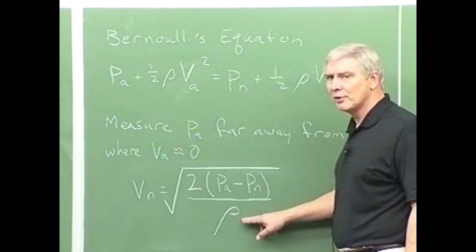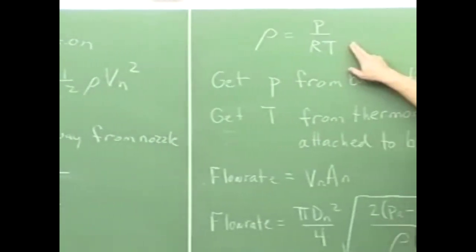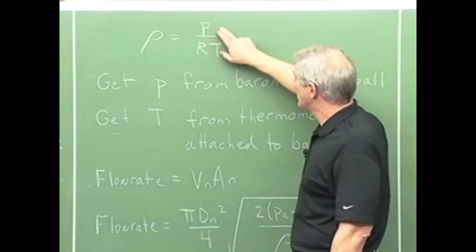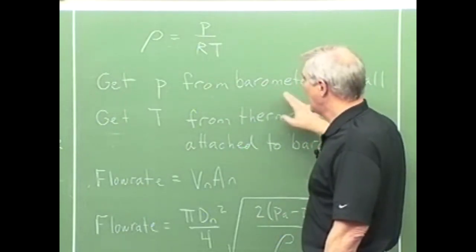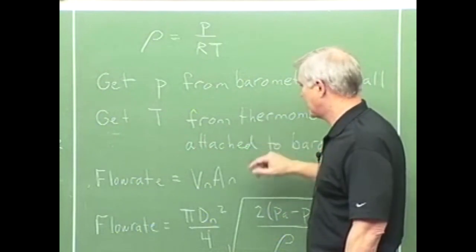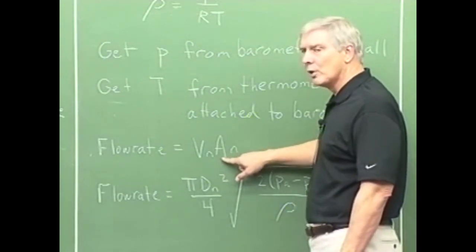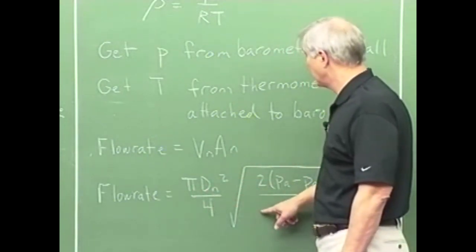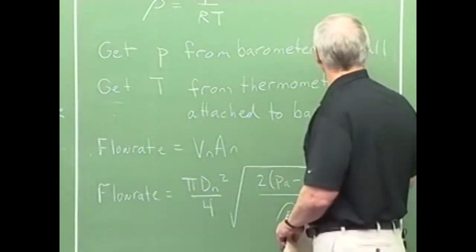In order to get the, now what we don't have at this point is the density of the air. To get the density of the air, we use the equation of state, where density is equal to P over RT. To get the pressure in the room, we have to use the barometer, which is on the wall, right next to the fan performance apparatus. And then there's also a thermometer attached to that barometer, and so we get that from the thermometer. The flow rate is just equal to the velocity at the nozzle times the area of the nozzle. Well, we're given the diameter of the nozzle, so that would be pi D nozzle squared over four times the square root of two delta P over rho, the velocity.